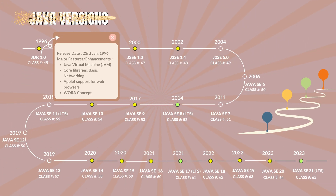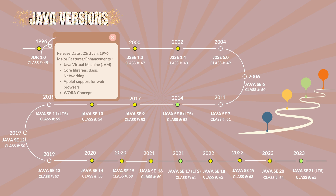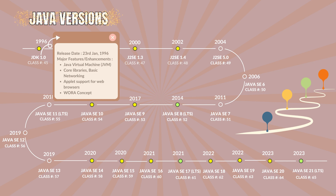Java 1.0 with the class file version 45.0. It was codenamed as Oak. It was released on 23rd January 1996. The major features and enhancements are Java Virtual Machine JVM, core libraries, basic networking, applet support for web browsers, and the write once, run anywhere concept.